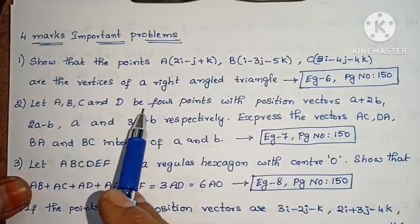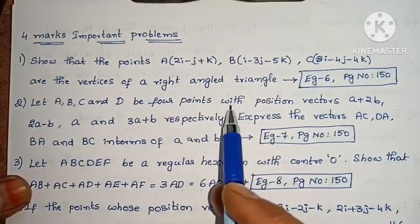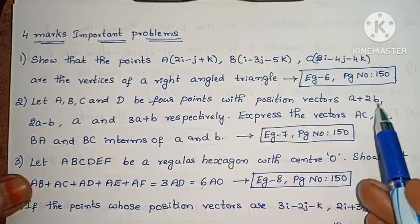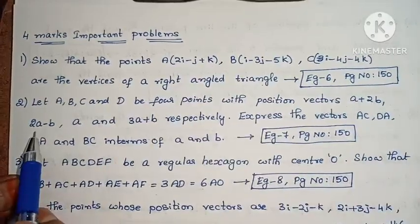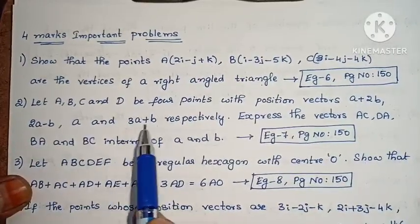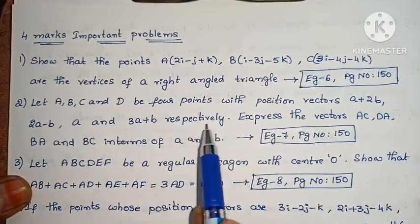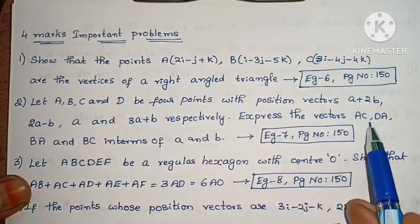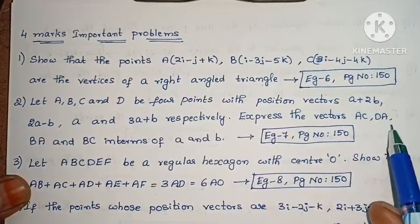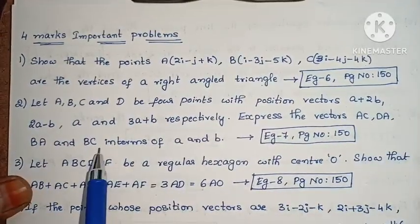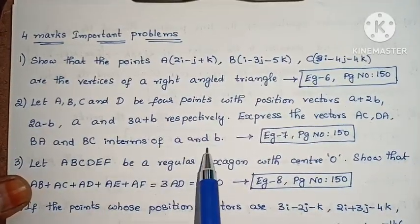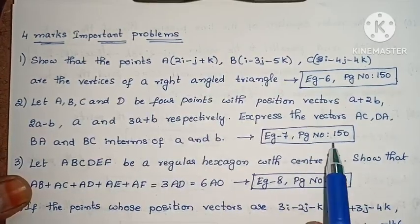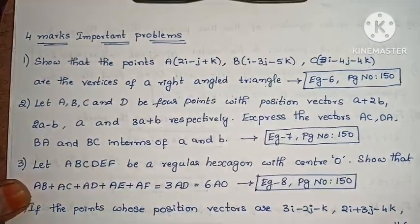Next: Let A, B, C and D be 4 points with position vectors a + 2b, 2a minus b, a and 3a + b respectively. Express the vectors AC, DA, BA and BC in terms of a and b. Example 7, page number 150.